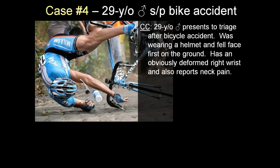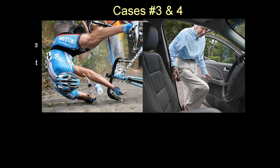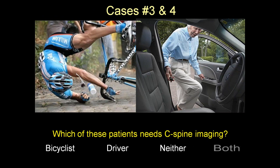A 29-year-old male presents after a bicycle accident. He was wearing a helmet and fell face first on the ground. His right wrist is obviously deformed — it looks like the letter S — and he describes neck pain. His vitals are normal; the right wrist is a pretty obvious break. He arrives ambulatory. Which of these patients do you think needs cervical spine imaging? The bicyclist? The elderly driver? Neither or both?